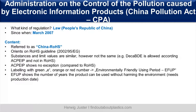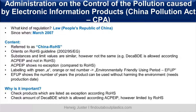The CPA also shows no exceptions compared to RoHS. There is a labeling requirement with a green 'E' or an orange/red number, referring to the environmentally friendly use period — indicating the number of years the product can be used without harming the environment. A production date must also appear on the device. It is always important to check products listed as exceptions under RoHS and to check the amount of deca-BDE, which is allowed under CPA but limited by RoHS.